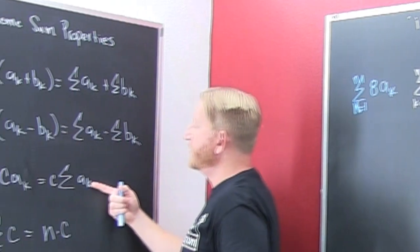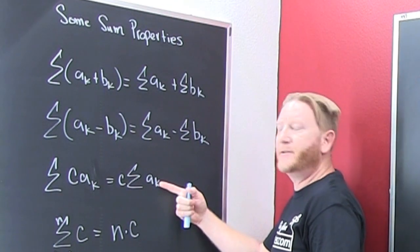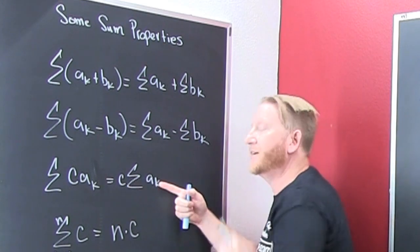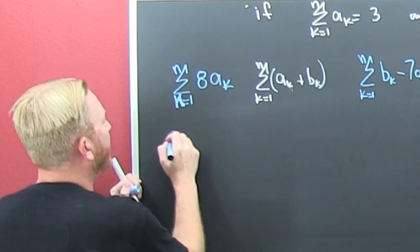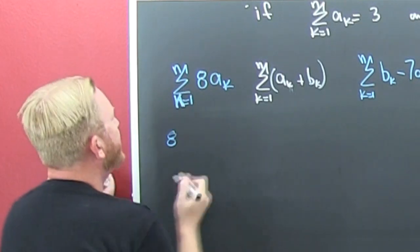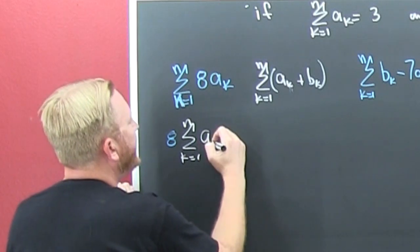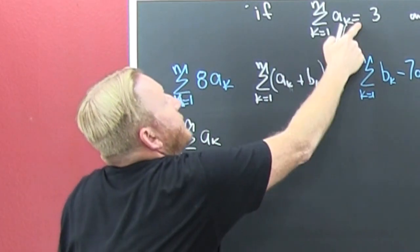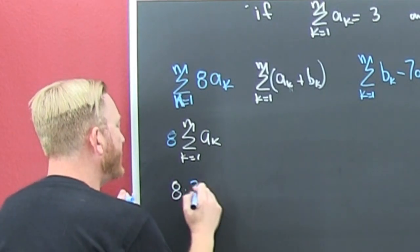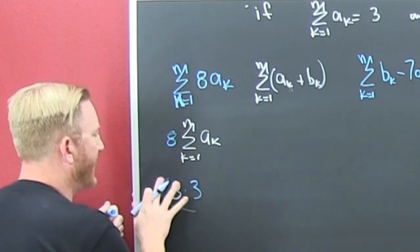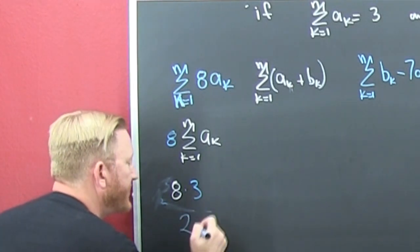I can pass a constant out of the sum. So that's what I'm going to do right here. I'm going to pass that constant out of that sum, and then I have that sum K equals 1 to N of AK. But they told me that was 3. So that says 8 times 3. That is 24.